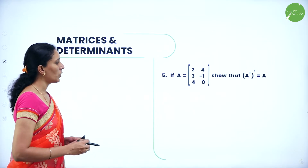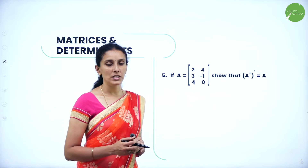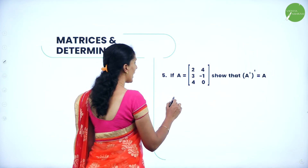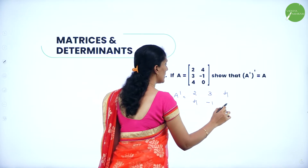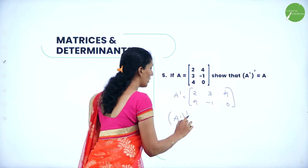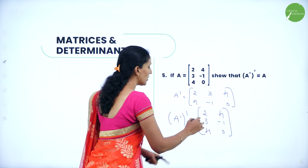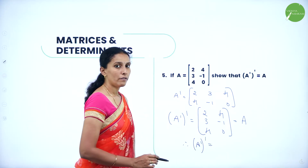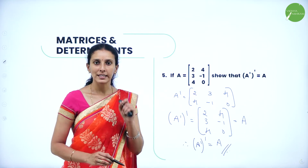Next, if A = [2, 4; 3, -1; 4, 0], show that A double-dash equals A. The dash represents the transpose of a matrix, that is writing rows as columns or columns as rows. First find A dash (transpose): columns become rows, so A' = [2, 3, 4; 4, -1, 0]. Now taking the transpose again (A double-dash): write columns into rows to get [2, 4; 3, -1; 4, 0], which is exactly A. This is a property: the transpose taken twice gives back the original matrix.